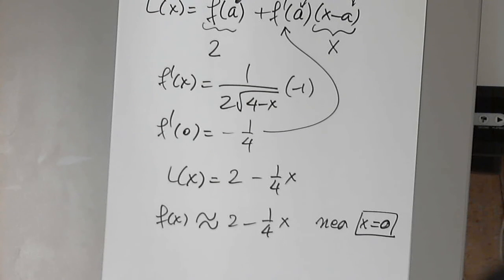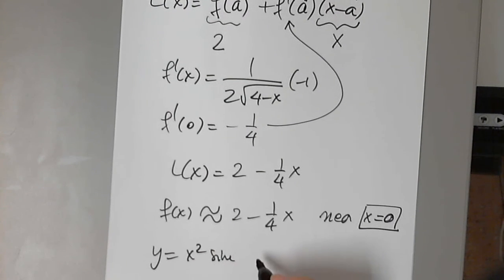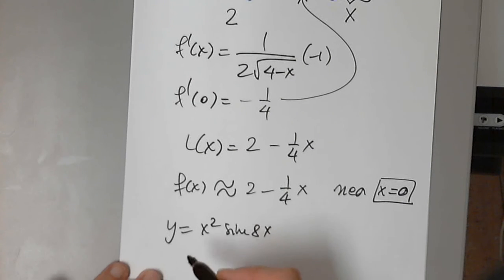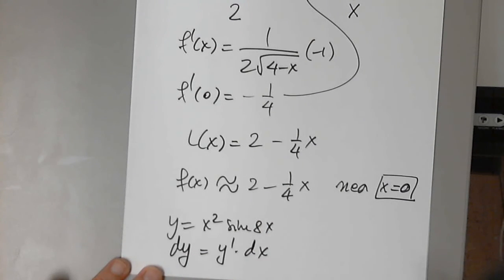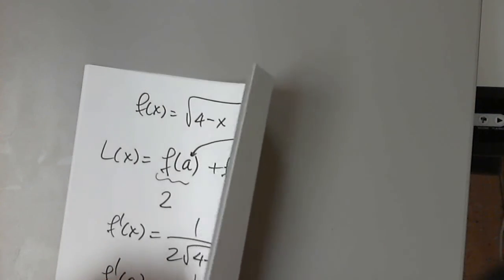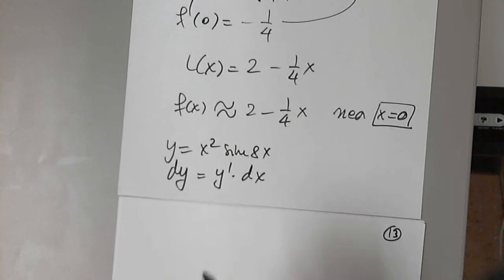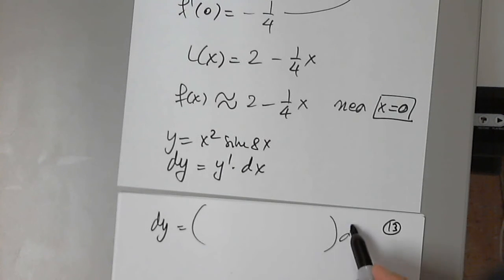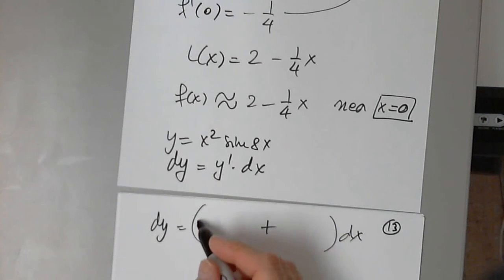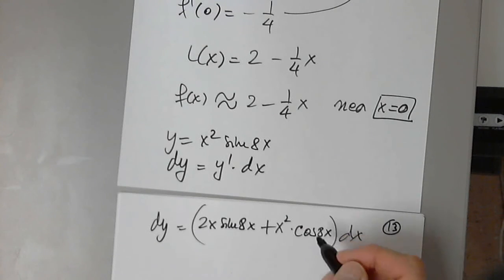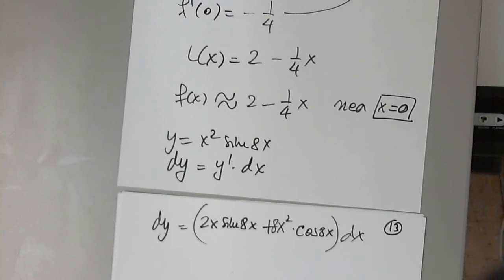y equals x squared sine of x. The differential: dy equals y prime times dx. So I have to differentiate — it's a product. We have dy equals — this is a product — first function prime, 2x sine x, plus the first function times the second function prime, which is cosine x multiplied by the inner function prime. And that's all I need to do to determine the differential. Don't forget to repeat the dx.